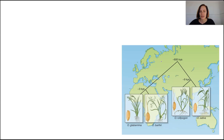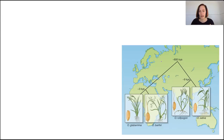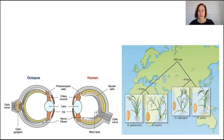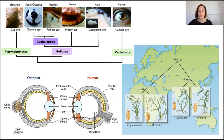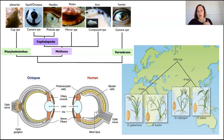Examples of parallel evolution include domesticated rice species, which originally came from a common ancestor and then various varieties grew across Asia and Africa. Their phenotypes developed separately but in similar environments, and the selection pressure of domestication led them to show similar phenotypes. Another example is the complexity of the eye across many species — the octopus evolved its complex camera eye independently of vertebrates, and it is estimated that the eye has evolved over 50 different times in species like flies, flatworms, mollusks, and vertebrates.